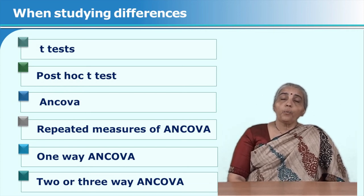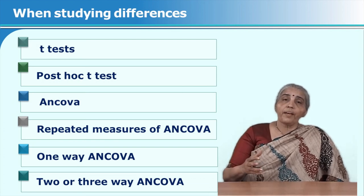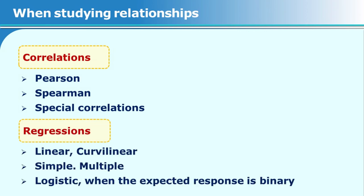Other options include post-hoc t-tests and two-way or three-way ANOVAs to test multiple omnibus hypotheses simultaneously. Now, when studying relationships rather than differences, we typically choose correlation or regression. In correlations, we see how data varies together — whether when one set of data goes up, the other rises too, or whether it is an inverse relationship, such as as age goes up, motor speed goes down. You have various correlation options: a Pearson correlation for interval data, or a Spearman rank-order correlation for ordinal data.